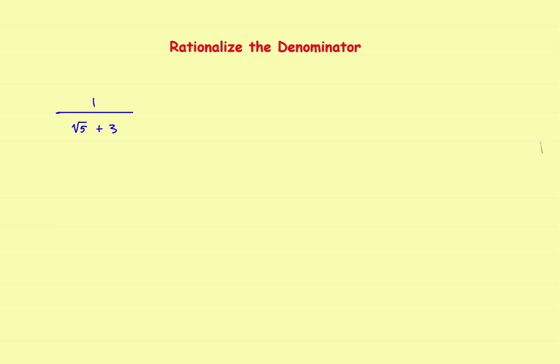Let's look at an example from back in algebra called rationalizing the denominator. The problem here is you've got to get this square root out of the denominator. You've got a square root of 5 and you have to get it from the denominator up into the numerator. The way you did this is multiplied by the conjugate of the denominator.